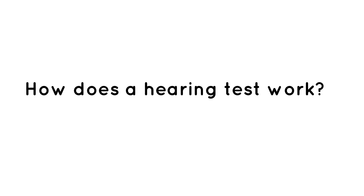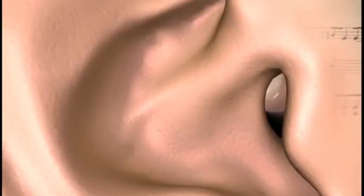How does a hearing test work? Our ears have three distinct parts: the outer, middle, and inner ear. Audiometry tests can detect whether you have sensorineural hearing loss, which is damage to the nerve or cochlea, or conductive hearing loss, which is damage to the eardrum or the tiny ossicle bones.